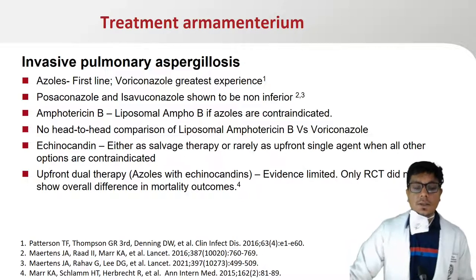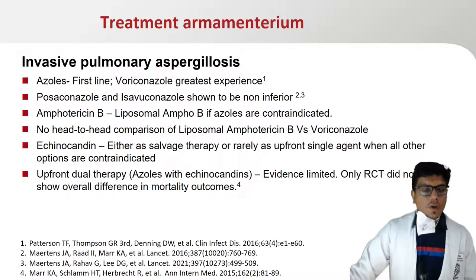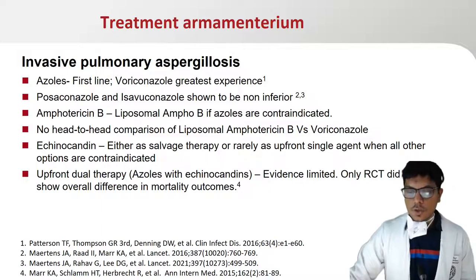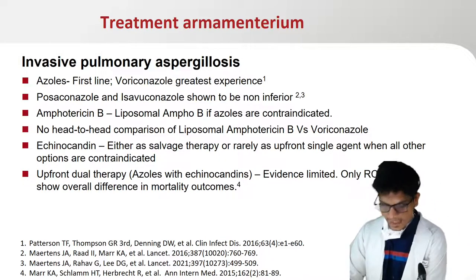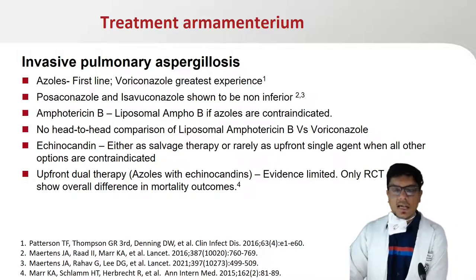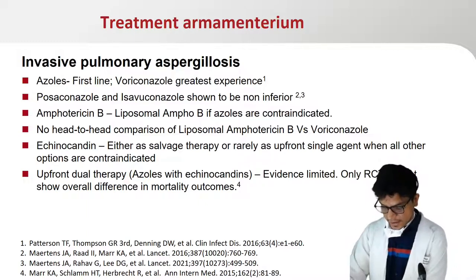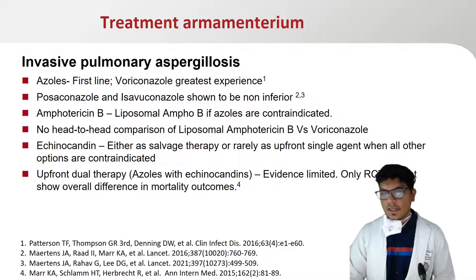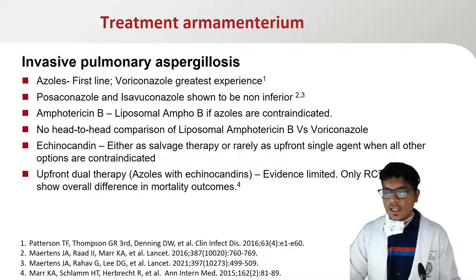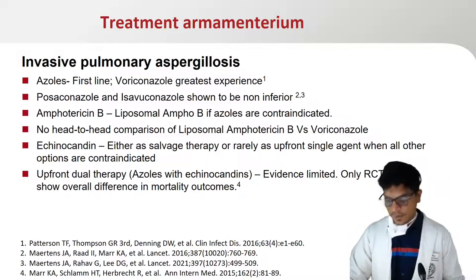Coming to treatment: the greatest evidence is with azoles, particularly voriconazole. Over the last five to six years, two non-inferiority trials have compared posaconazole and isavuconazole, which have been shown to be non-inferior. If azoles are contraindicated, the second option is liposomal amphotericin B, although there has been no head-to-head comparison with voriconazole. Echinocandins are usually given in salvage settings, but if all other options are contraindicated, they can be used as upfront single agent. Upfront dual therapy has limited evidence — the only RCT done did not show overall mortality benefit except in a subset of patients.